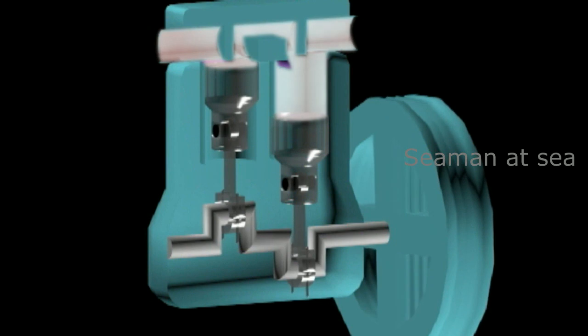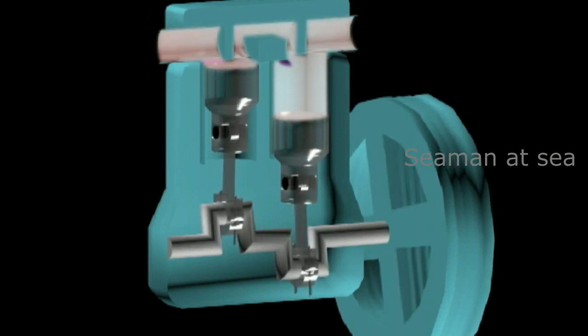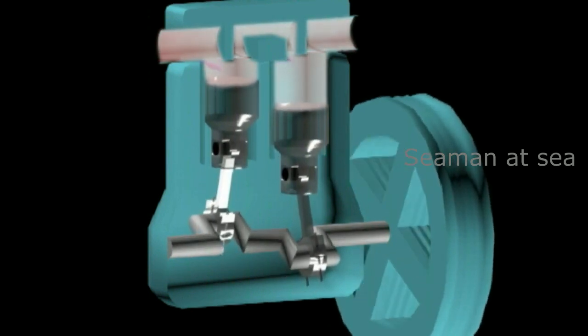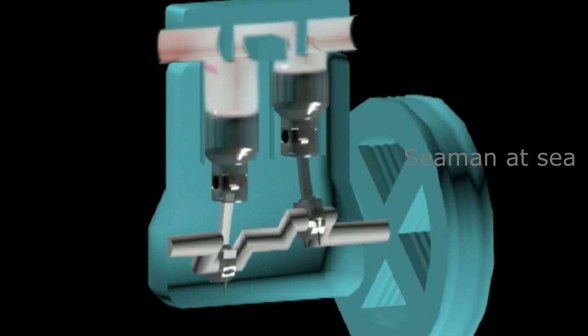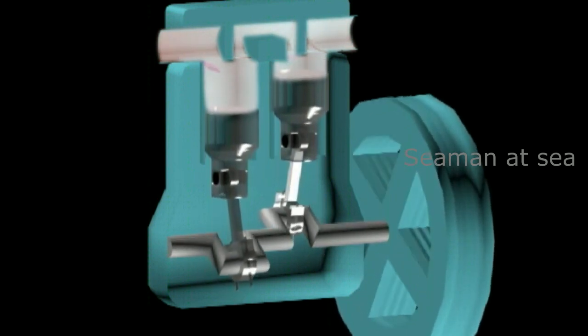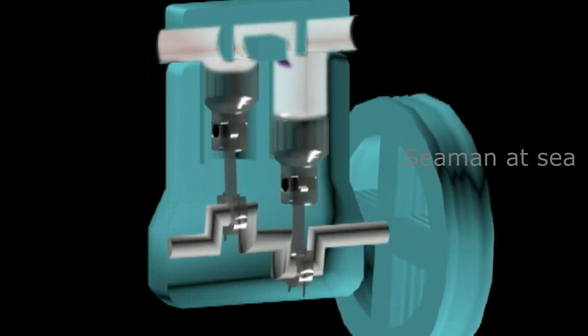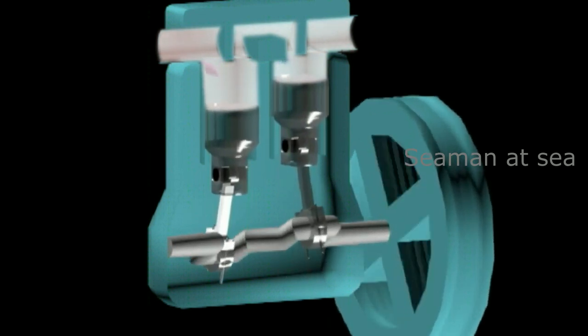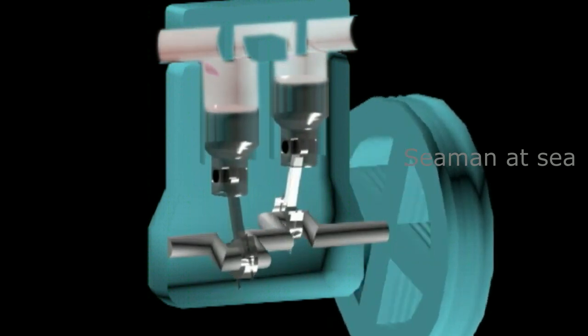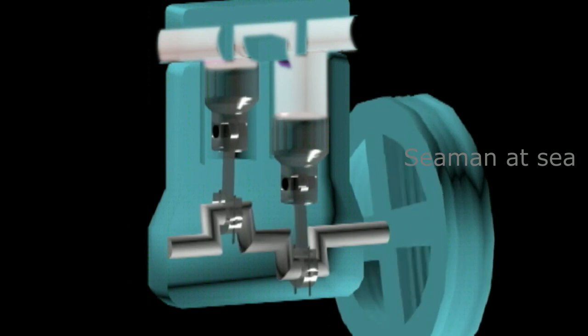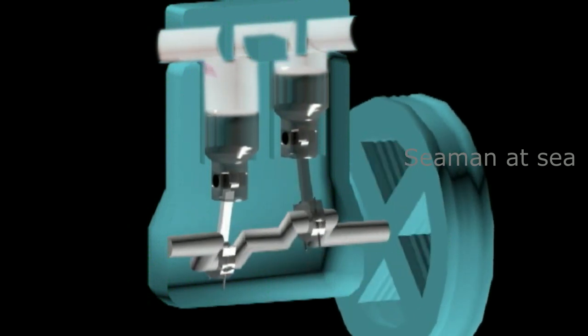The compressor also promotes circulation of the refrigerant by pumping it around the system. On a suction stroke where the piston is moving downward, the clearance space between the piston and the cylinder head will expand. The drop of the pressure will open the plate-type suction valve and forces the refrigerant to enter the chamber until such time as the suction valve closes.